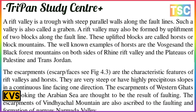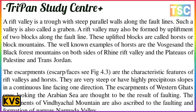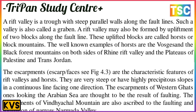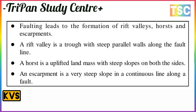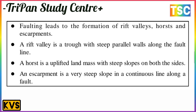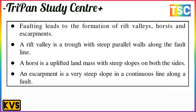The scarp face is a characteristic feature of the rift valley and horst. There are very steep, highly precipitous slopes in a continuous line facing one direction. The scarp of the Western Ghats facing the Arabian Sea is thought to be the result of faulting. The creeping of the Vindhyachal mountains is also ascribed to faulting, and the formation of the narrow Narmada valley is also due to faulting. Faulting leads to the formation of rift valleys, horsts, and scarp faces. A rift valley is a graben with step-like walls along the fault line, and a horst is an uplifted landmass with steep slopes on both sides.